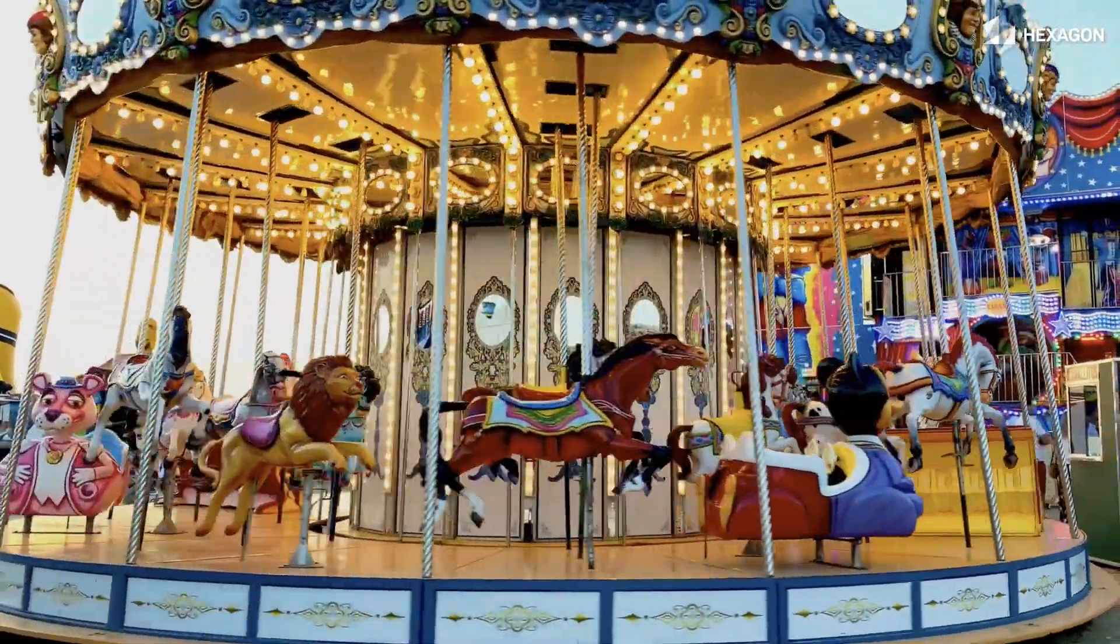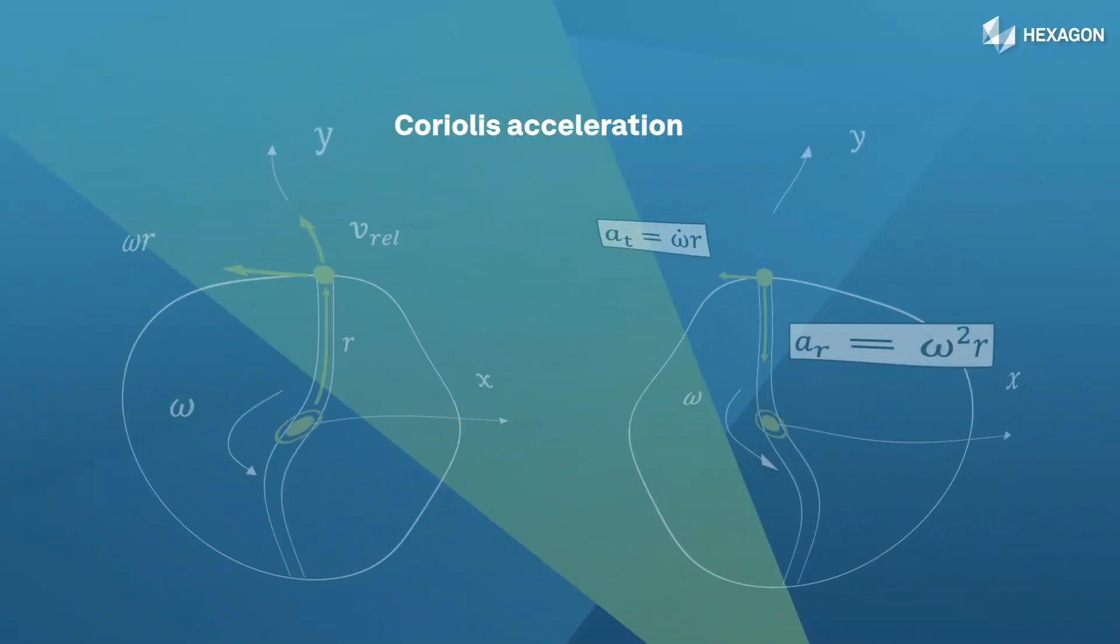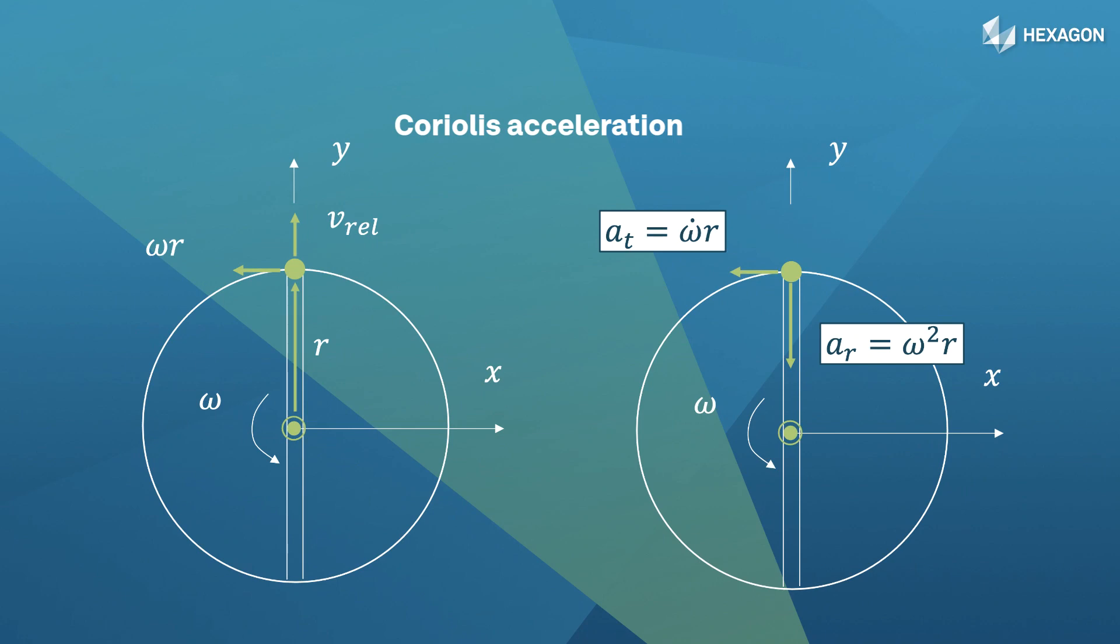But let's first study the velocities and accelerations assuming you are walking toward the center of the merry-go-round. You have tangential speed equal to the rotational speed, omega, of the platform multiplied by the distance from the center, r. You also have radial velocity that is equal to your walking distance speed relative to the spinning platform.